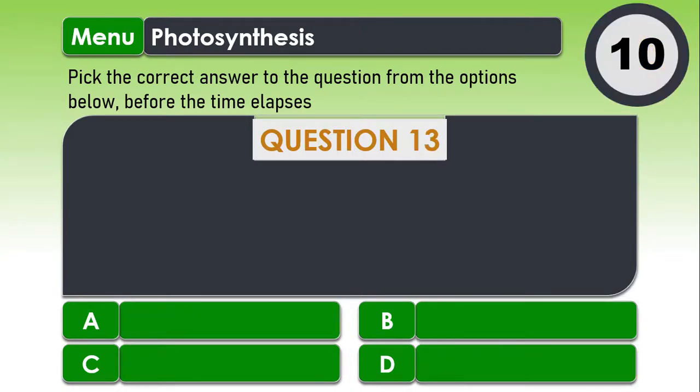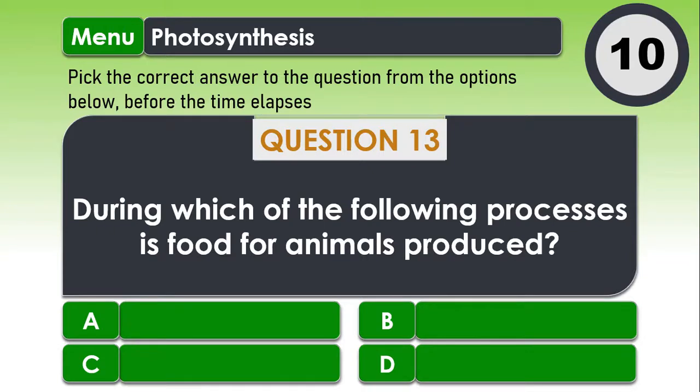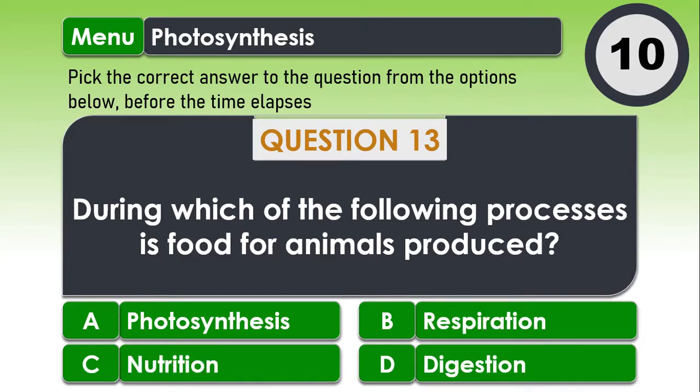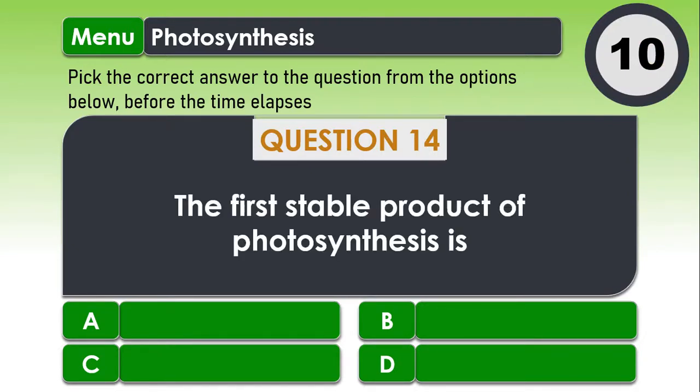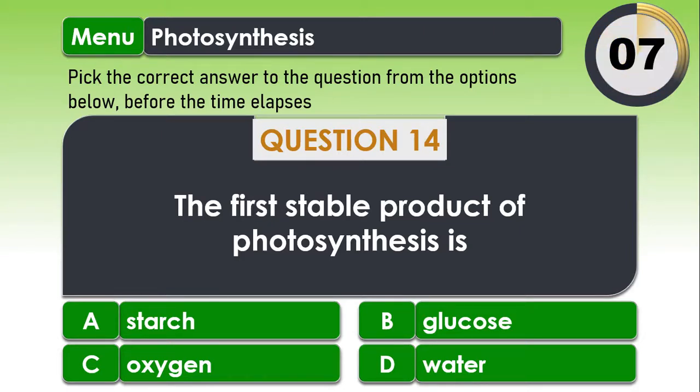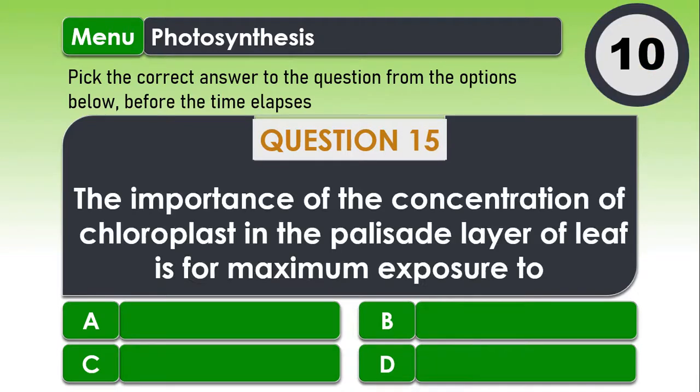Question 13. During which of the following processes is food for animals produced? A. Photosynthesis B. Respiration C. Nutrition and D. Digestion. Question 14. The first stable product of photosynthesis is A. Starch B. Glucose C. Oxygen and D. Water.